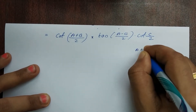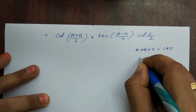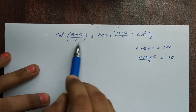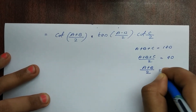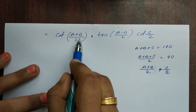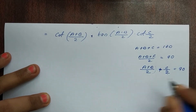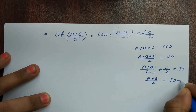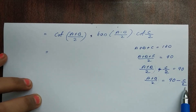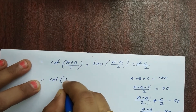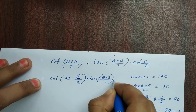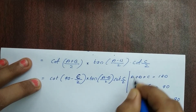Now we know that A plus B plus C equals 180 degrees. Dividing by 2: (A plus B plus C) divided by 2 equals 90. So (A plus B)/2 equals 90 minus C/2. Therefore cot((A plus B)/2) equals cot(90 minus C/2).